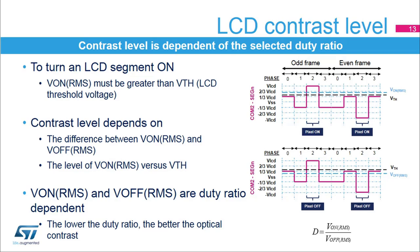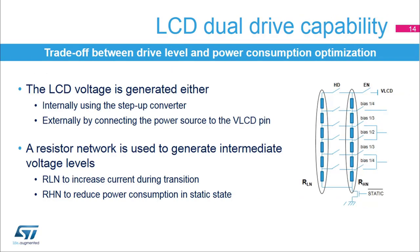When the number of COM terminals required to drive the LCD display increases, the discrimination ratio D — the contrast level that the LCD display can achieve — decreases, since the separation between VON RMS and VOFF RMS decreases and the contrast decreases. As a consequence, to provide a better contrast and a greater separation between VON RMS and VOFF RMS when the multiplexed rate increases, the LCD voltage must be increased. Make sure the LCD controller configuration matches the LCD display needs in terms of segment and common terminals, otherwise this could result in a lower contrast. In the LCD controller, the power supply source may come from either the internal step-up converter or from an external voltage source applied on the VLCD pin.